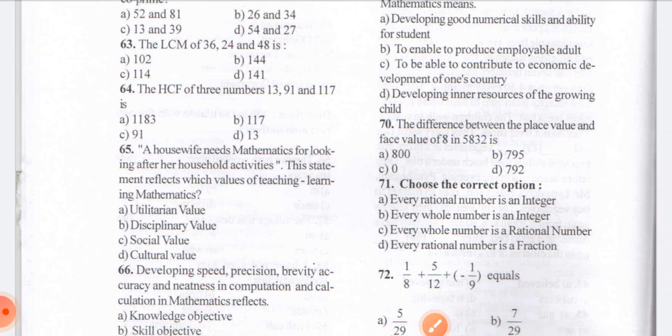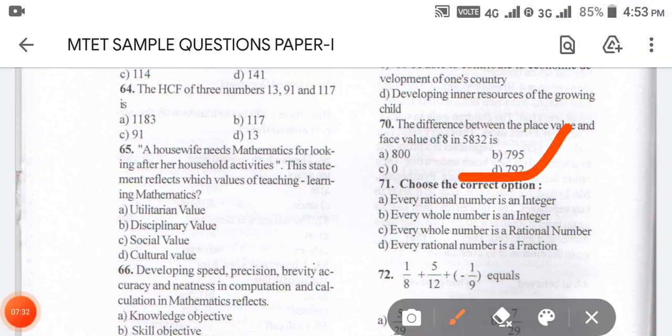Coming to question number 70: the difference between the place value and face value of 8 in 5832. The place value of 8 is 800, and the face value is 8 itself. So the answer is 800 minus 8 equals 792. The answer is D.